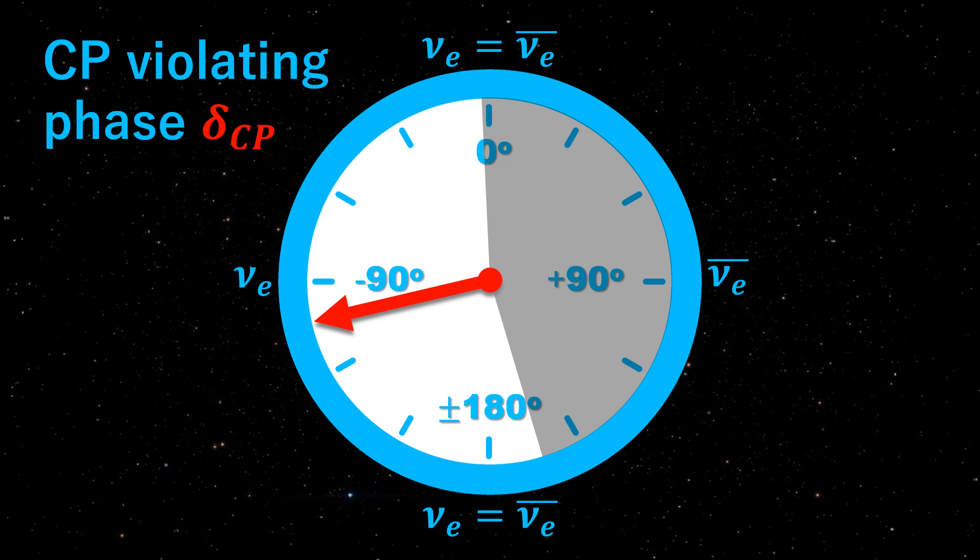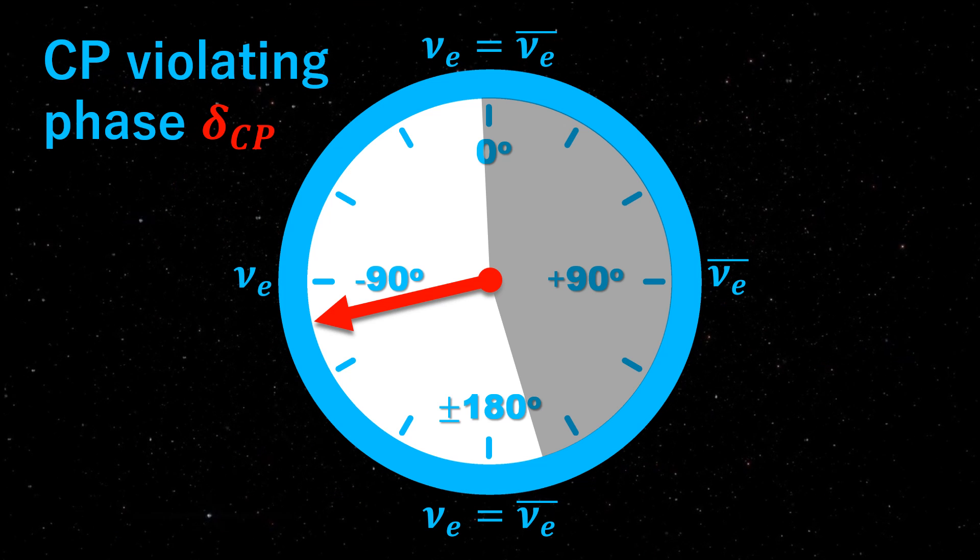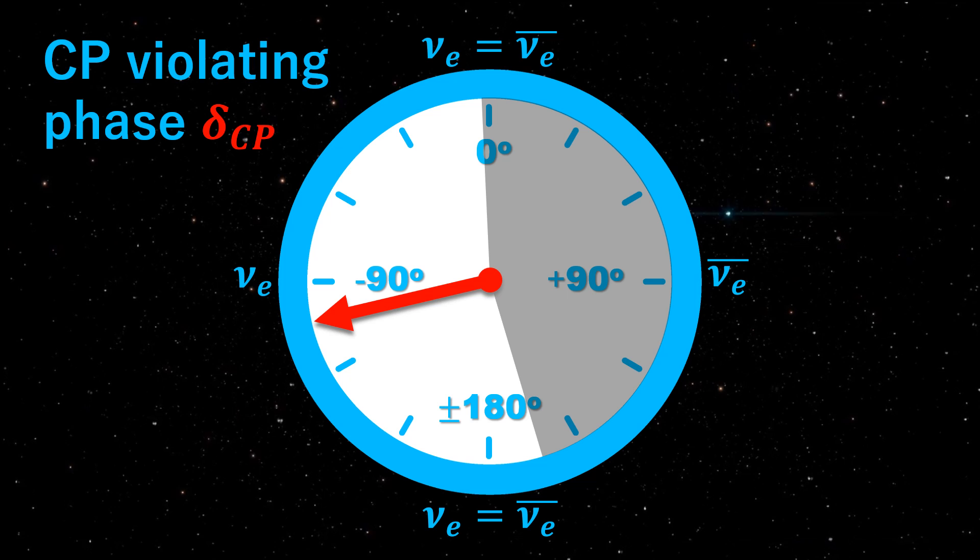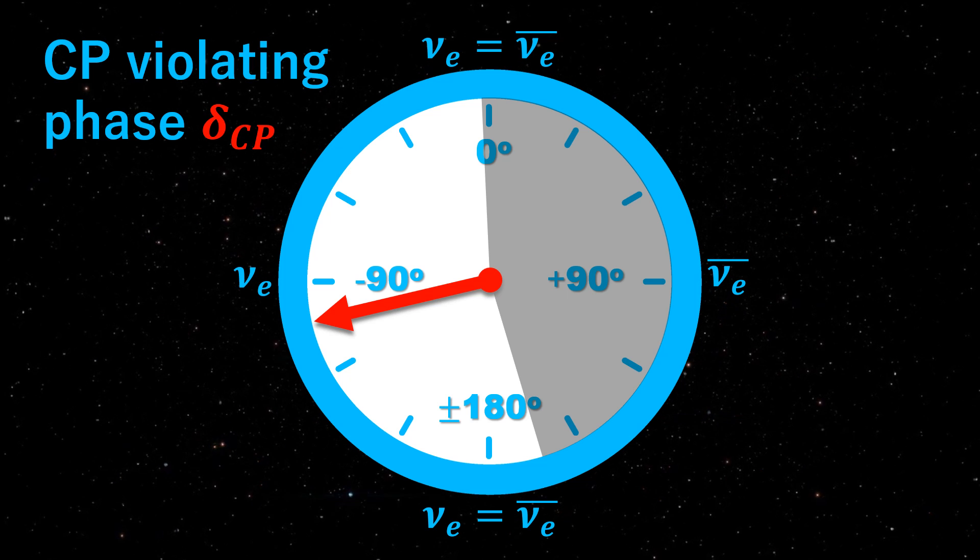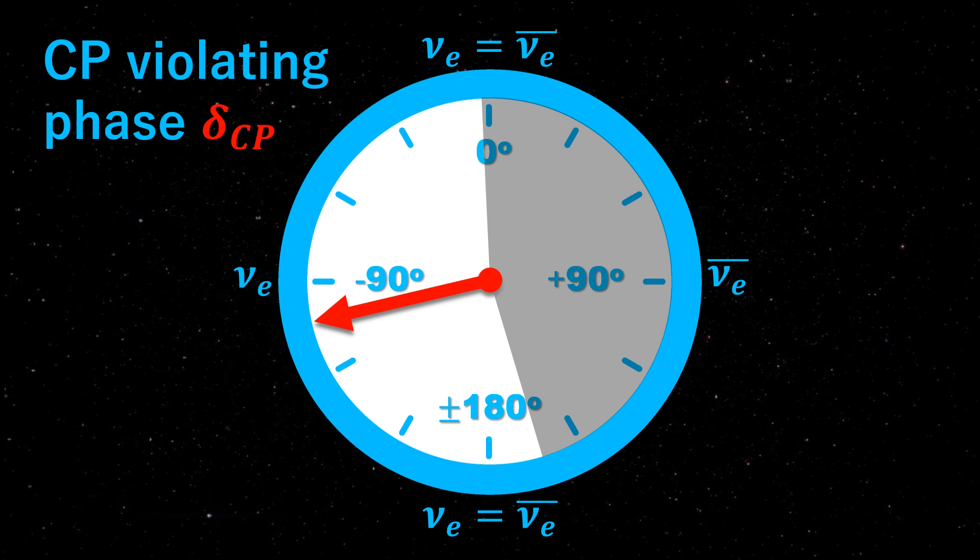The disfavored gray region at the 3 sigma, 99.7% confidence level is minus 2 degrees to 165 degrees. The red arrow indicates the value most compatible with the data.